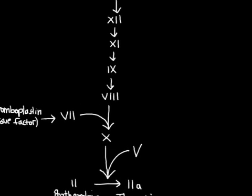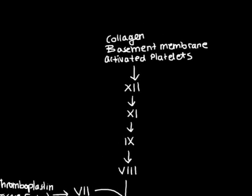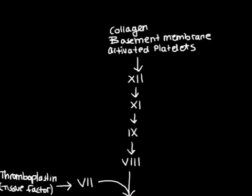To start with, let's look at the intrinsic pathway, which is here. It starts by the exposure of collagen and basement membrane, which activates factor 12, turning it into 12a, which in turn activates factor 11, turning that into factor 11a, and again that activates factor 9 into factor 9a, and finally factor 8 into factor 8a.